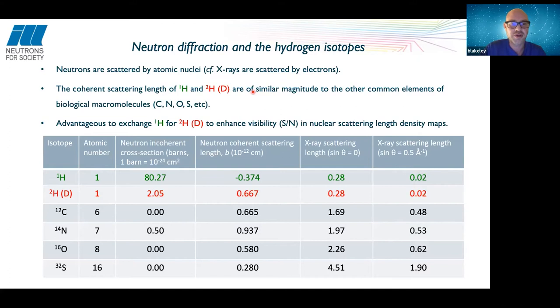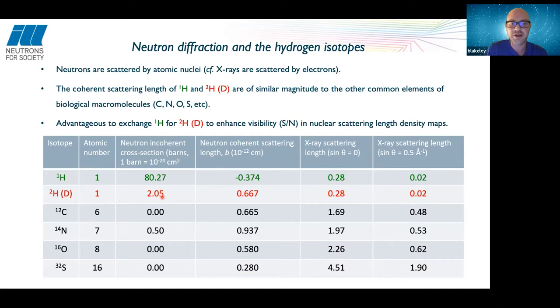In contrast, because the scattering strengths are different, neutrons give us the ability to visualize hydrogens or the isotope deuterium, because these scatter at similar strengths to the other common elements of biological macromolecules. Hydrogen itself has a very large incoherent scattering which contributes to the background in crystallography, so it is preferable to substitute hydrogens for deuterium, which has a much lower incoherent scattering — 40 times lower.